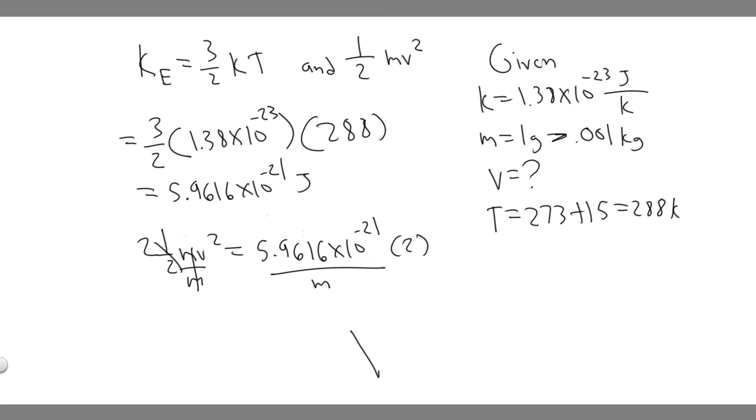It's going to be the square root, or your answer, the square root of 5.9616 times 10 to the minus 21 times 2, and then you're dividing by the mass. They tell us the mass of our paperclip is 1 gram, which is 0.001 kg. So go ahead and plug that in.